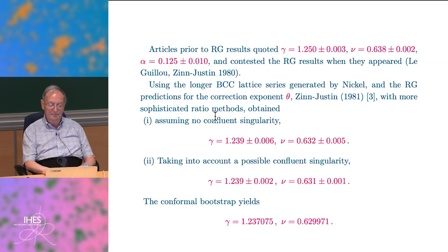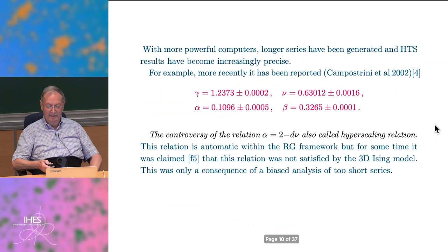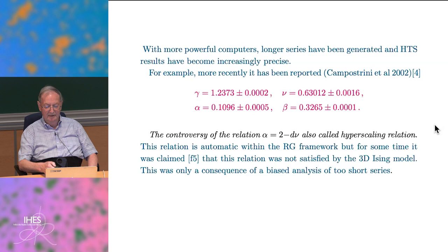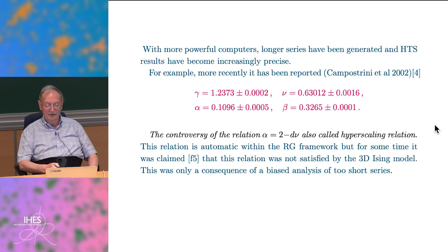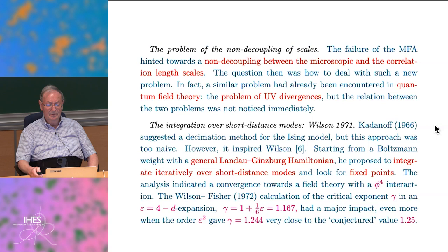With a more sophisticated analysis, results become more or less consistent with the renormalization group. The most recent results from around 2002 are essentially in agreement with renormalization group predictions. There was also a controversy on the so-called hyperscaling relation: alpha equals 2 minus d times nu. There was a claim this was not obeyed. In quantum field theory and renormalization group, it comes out automatically. This was ultimately a consequence of biased analysis of too-short series.